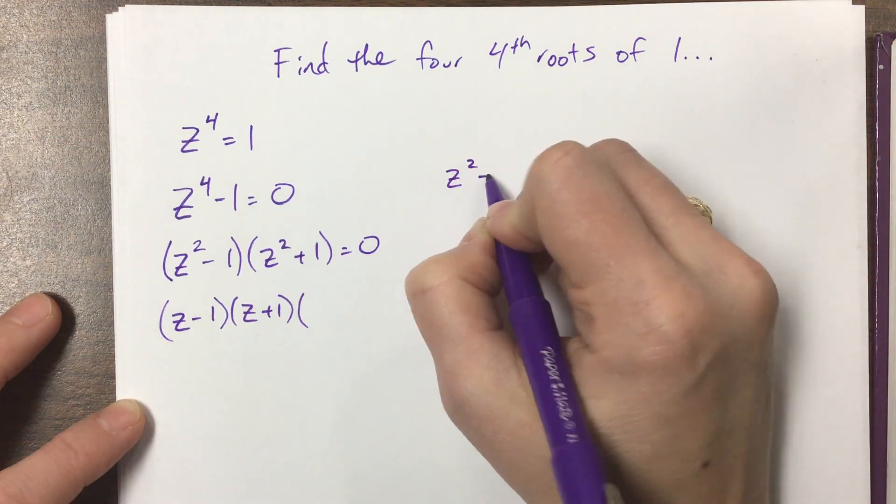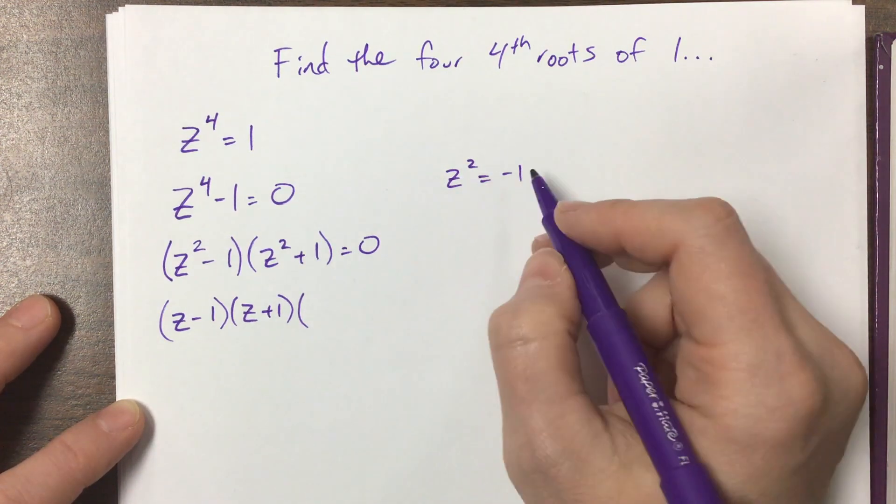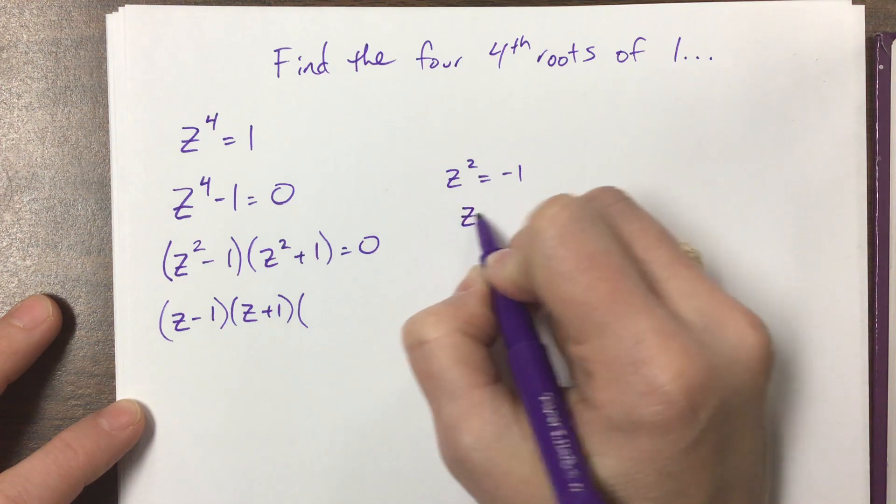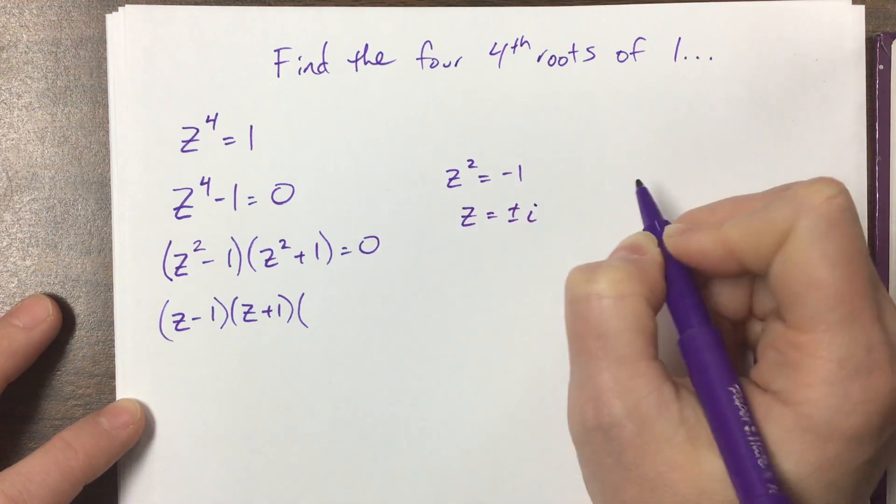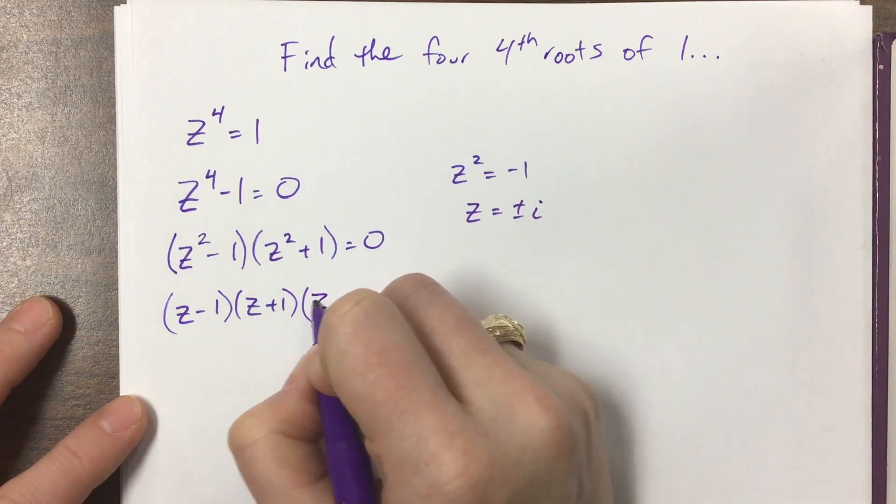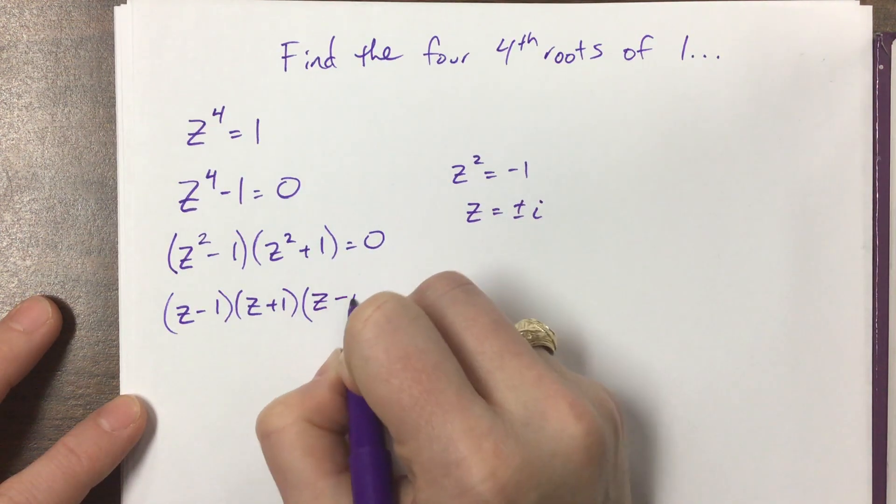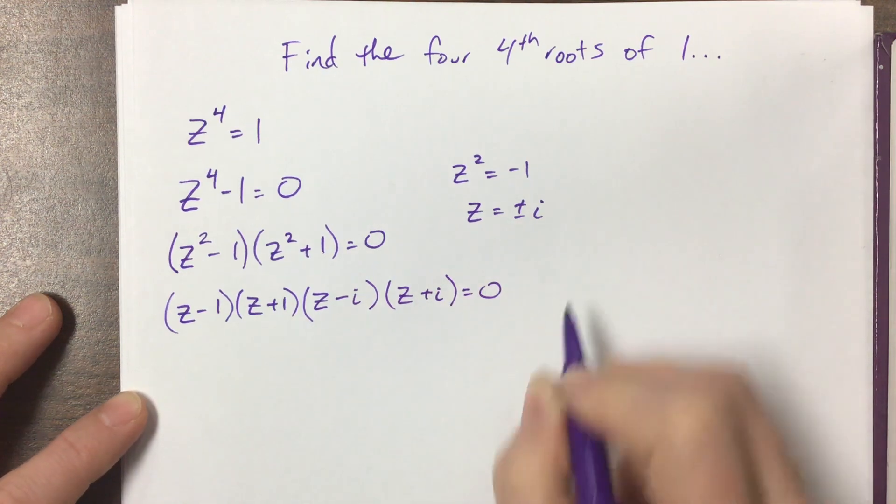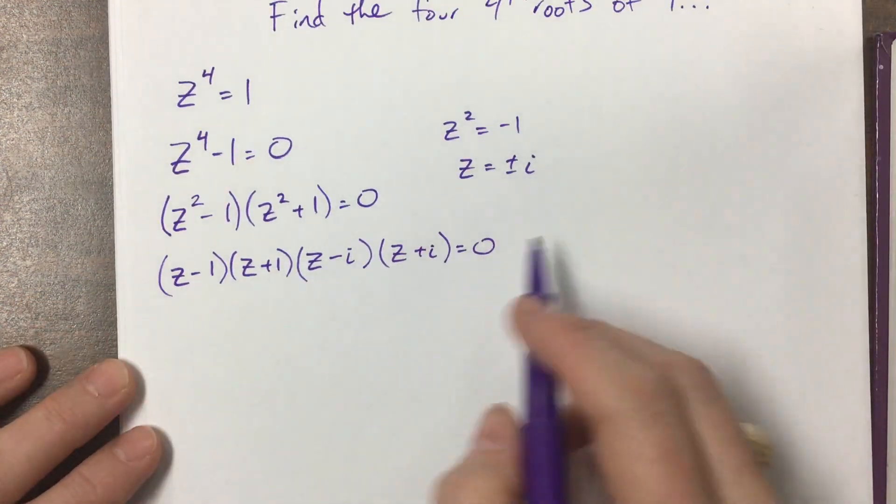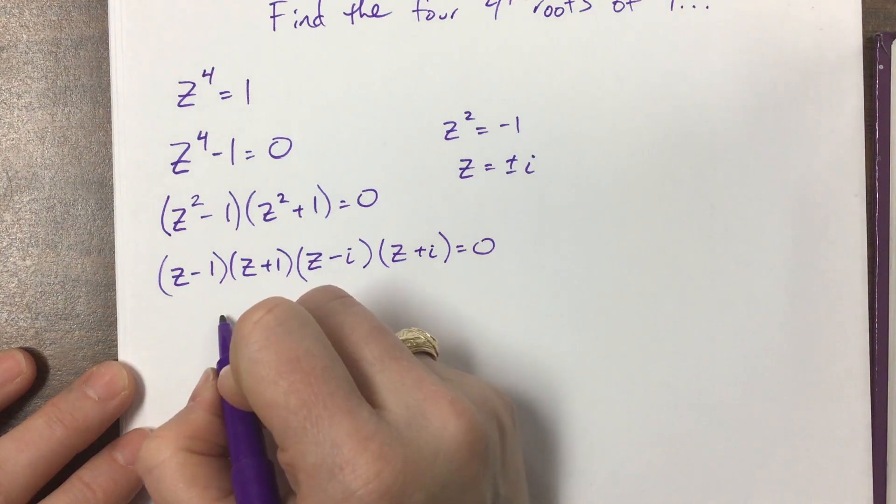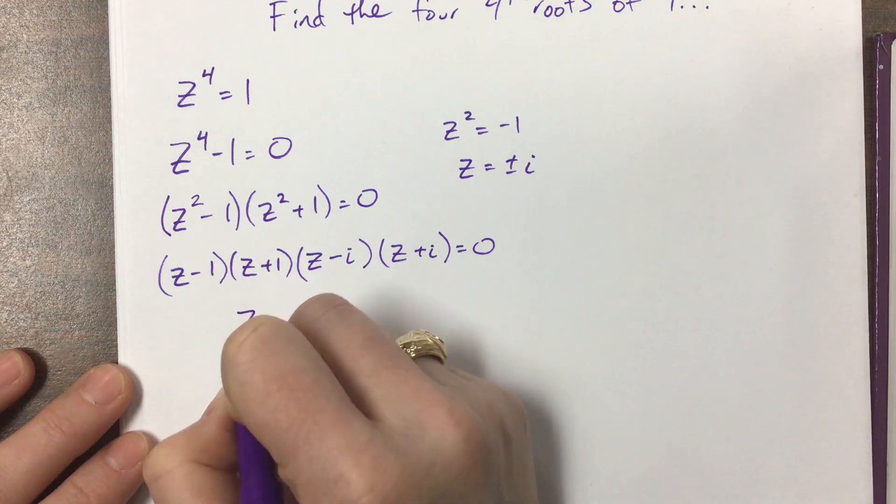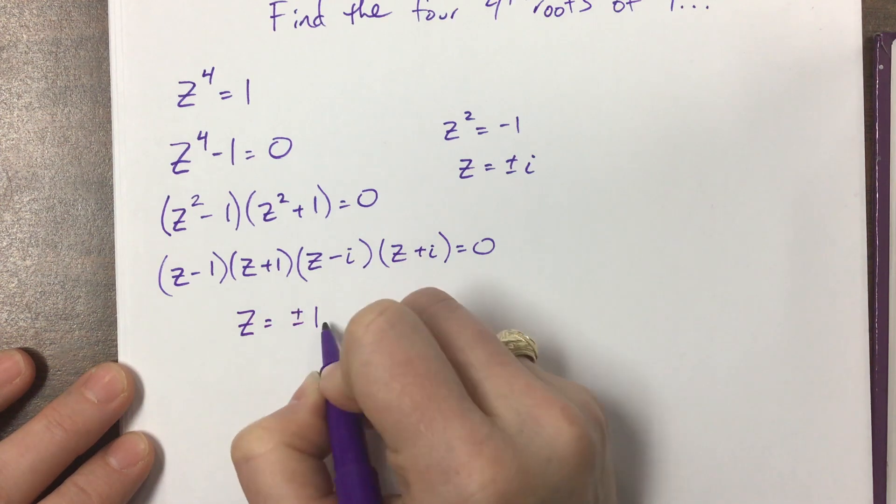z squared would equal negative 1. Square root, plus minus. The square root of negative 1 is i. So z here would equal plus or minus i. So this breaks down to z. One of them is minus i. The other one is z plus i. And now we have come down to what we have here is we've got our z value is equal to plus or minus 1 or plus or minus i.